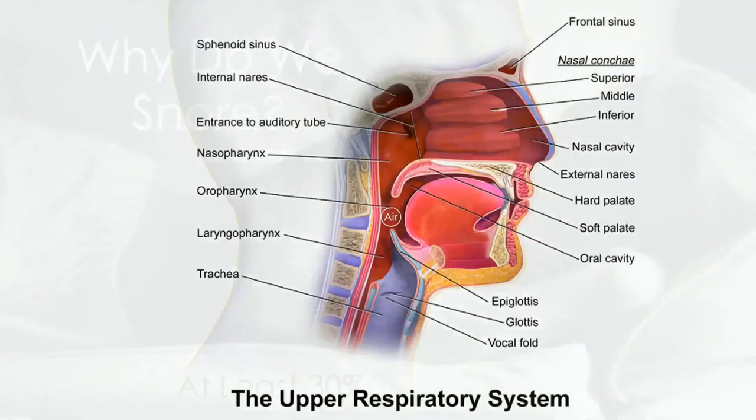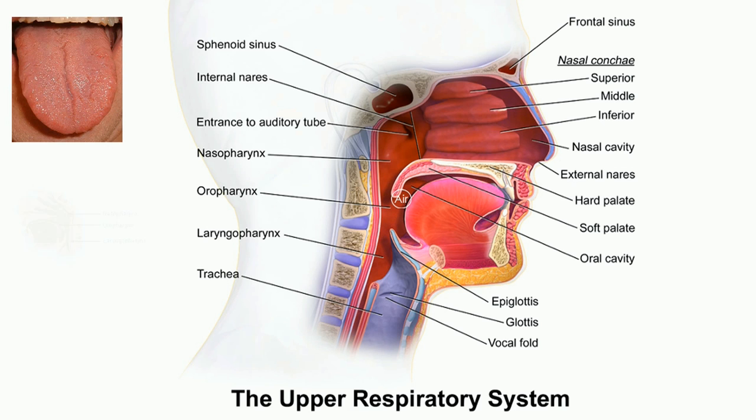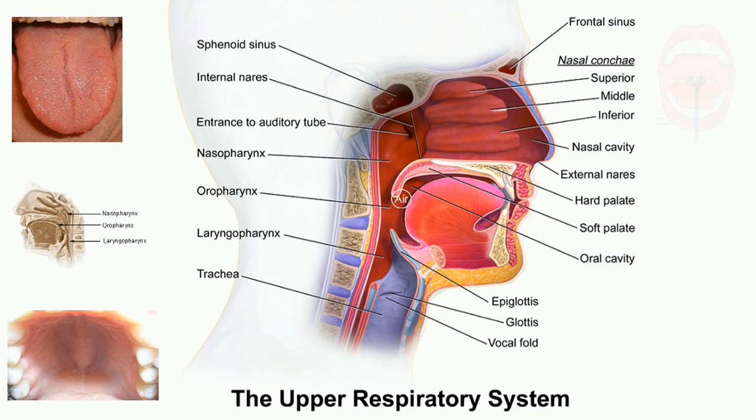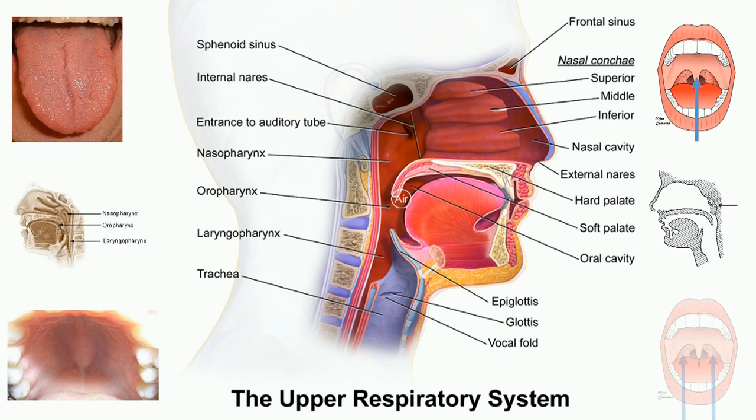Snoring occurs when air can't freely move and is trapped in a person's airways while they are sleeping. This obstruction of air vibrates the tongue, upper throat, soft palate, uvula, adenoids, and tonsils, which creates that annoying noise we all know too well.